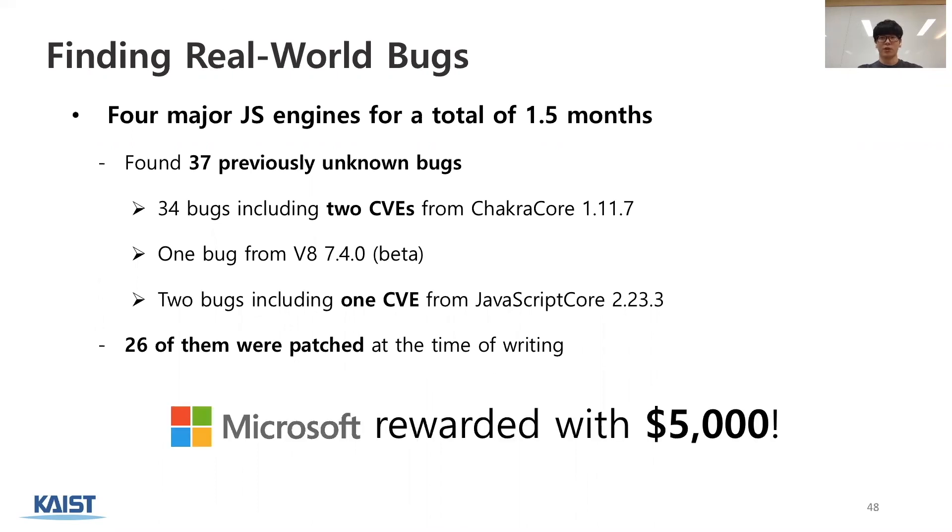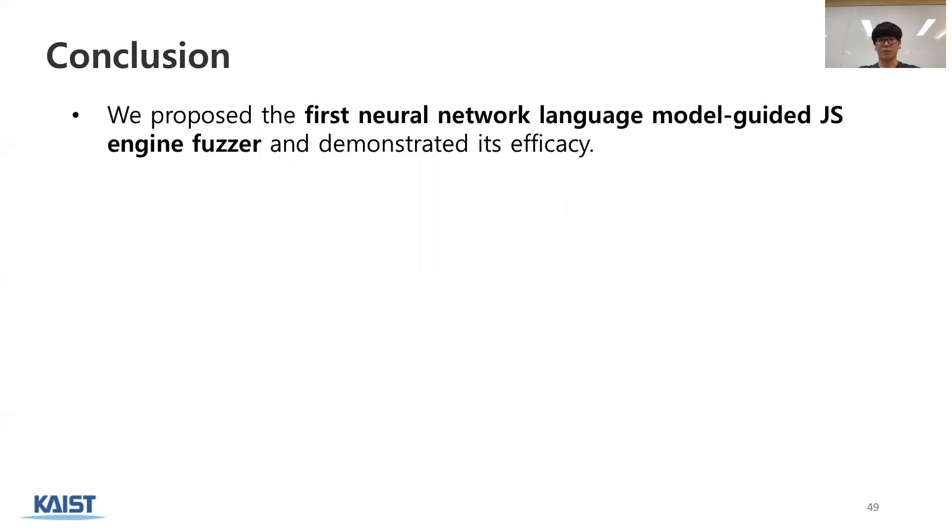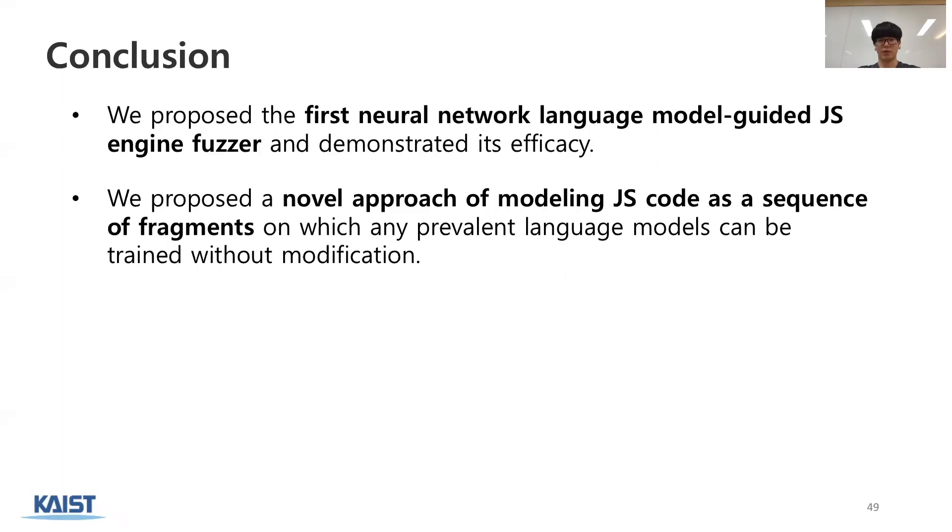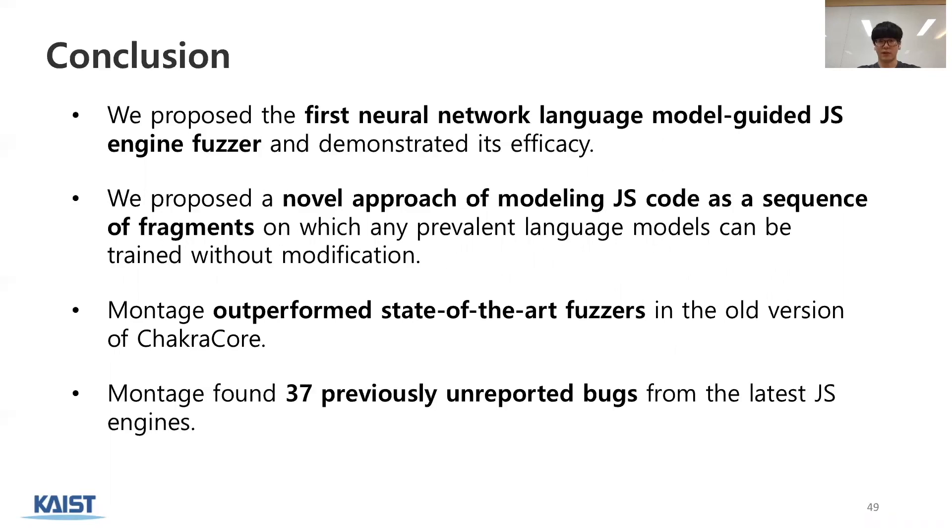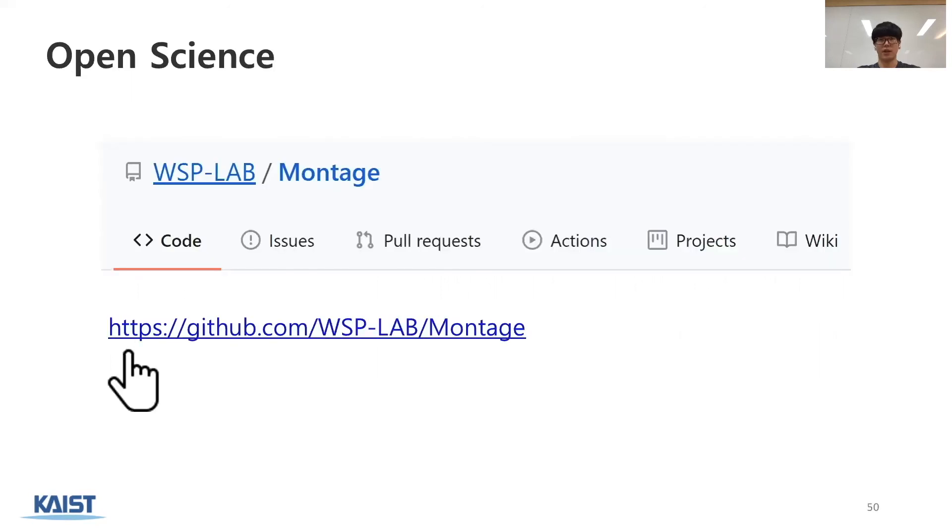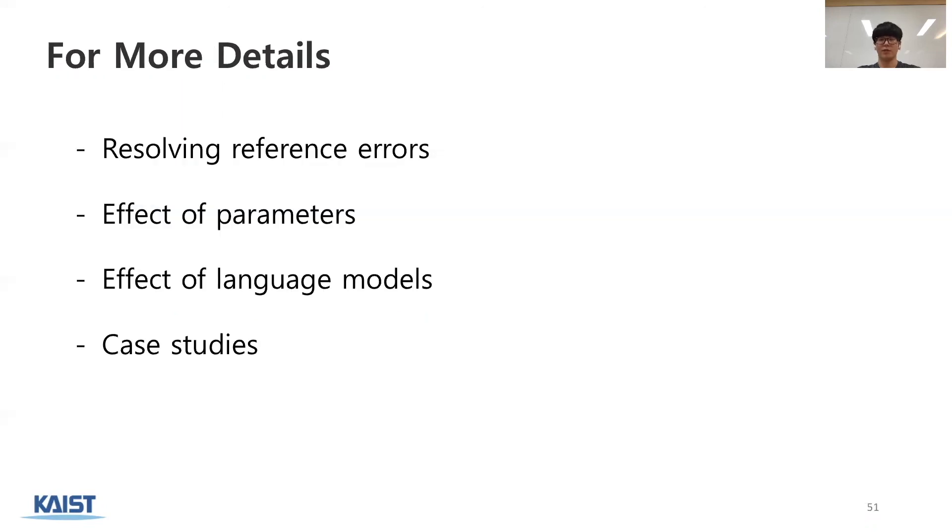In conclusion, we proposed the first neural network language model guided JS engine fuzzer and demonstrated its efficacy. We proposed a novel approach of modeling JS code as a sequence of fragments on which any prevalent language models can be trained without modification. Montage outperformed state-of-the-art fuzzers in the old version of ChakraCore. Montage found 37 previously unreported bugs from the latest JS engines. To support future research, we make our code public at this address. For more details of Montage, please refer to our paper.